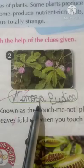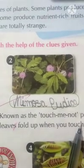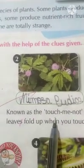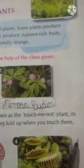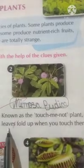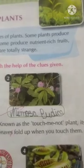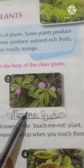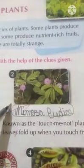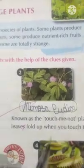Number two is Mimosa pudica. This is known as the touch-me-not plant. Its leaves fold up when you touch them — when you touch the leaves, they fold. So this is known as Mimosa pudica.